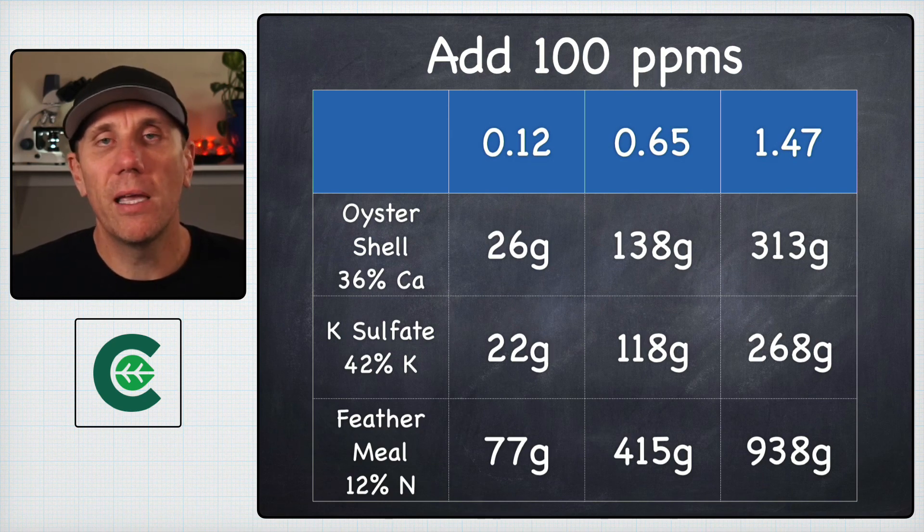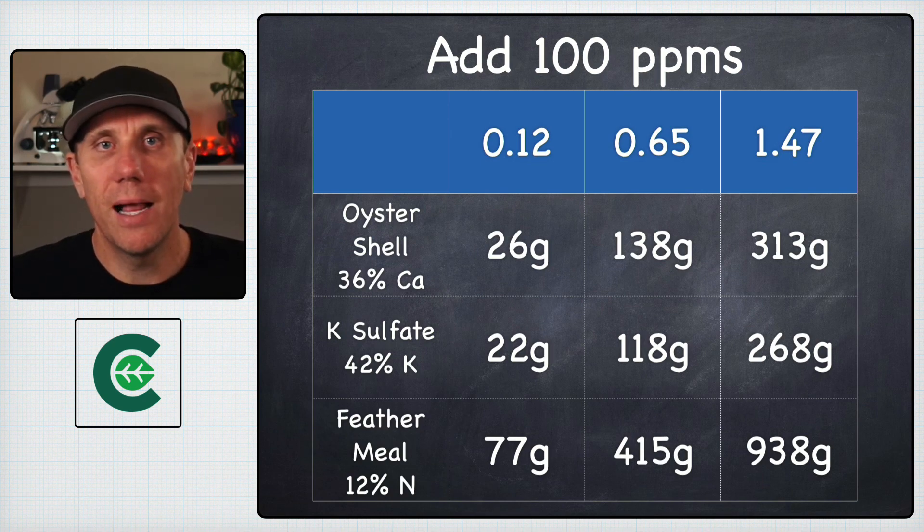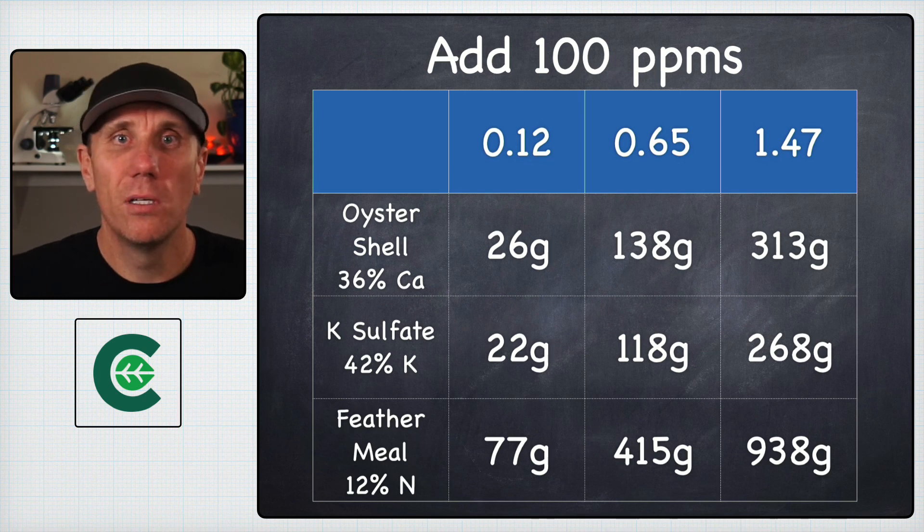This becomes complicated because most of the soils that I look at range somewhere around 0.2 to 0.5. That's a really common range - 0.2, 0.4, 0.6, those are really common potting soil ranges.